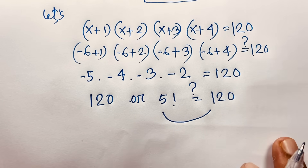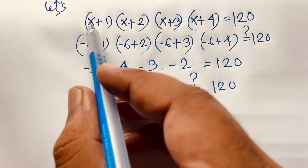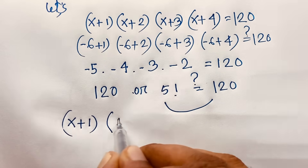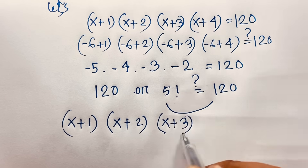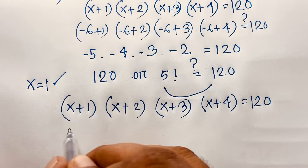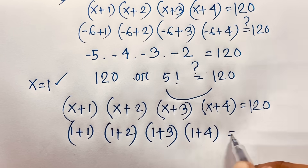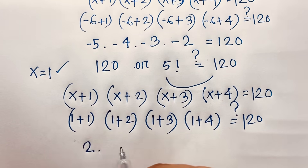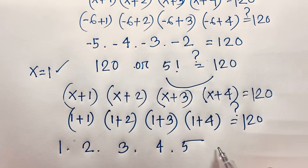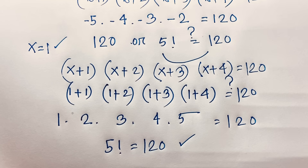Verification for x = 1: (1+1)(1+2)(1+3)(1+4) = 2×3×4×5 = 5! = 120. Left-hand side equals right-hand side. ✓ This confirms our solutions. If you enjoy this math problem, please subscribe to my channel for more interesting videos. Goodbye, take care everyone!